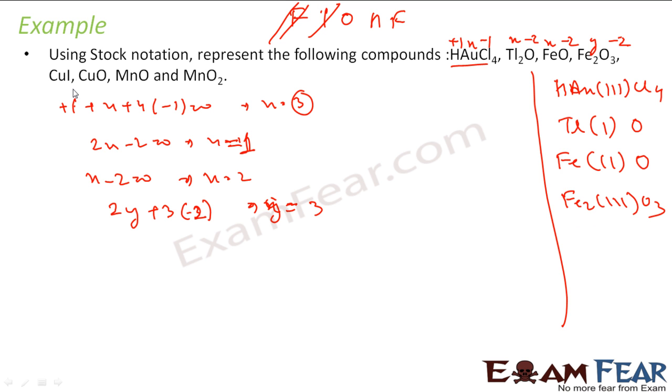Let's take CuI. Here I will be minus one and this will be Z. So this will become Z minus one equals zero, so that equals one. This becomes Cu(I)I.